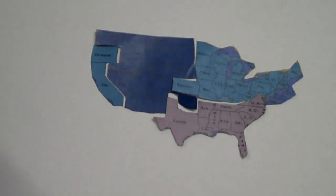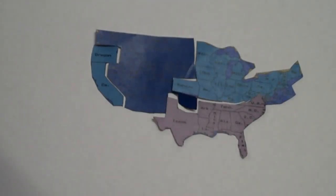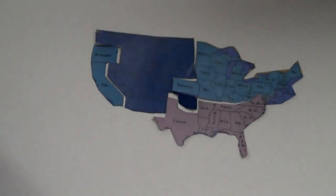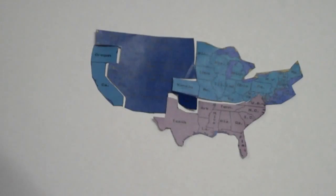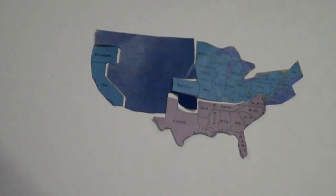A Civil War is a war within the country. So basically, instead of the United States fighting another country, it is practically fighting itself. The North and the South were both part of the United States, but they were only parts — two parts, in fact. Not one big part like a country should be.